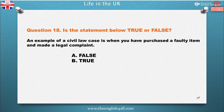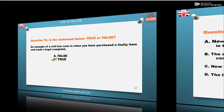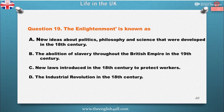Question 18: The Enlightenment is known as... A. New ideas about politics, philosophy and science that were developed in the 18th century. B. The abolition of slavery throughout the British Empire in the 19th century. C. New laws introduced in the 18th century to protect workers. D. The Industrial Revolution in the 18th century. The correct answer is: New ideas about politics, philosophy and science that were developed in the 18th century.